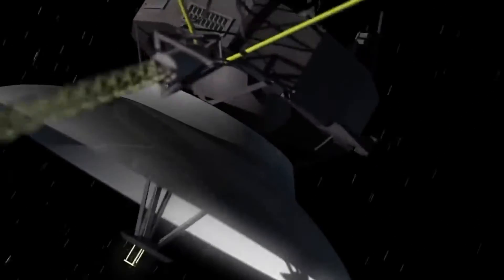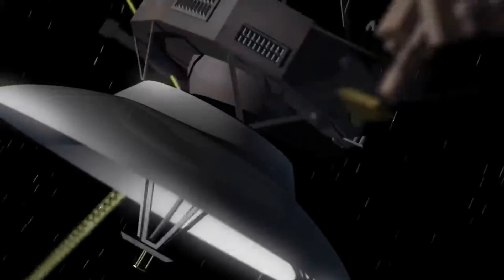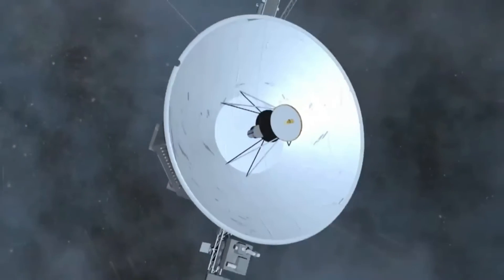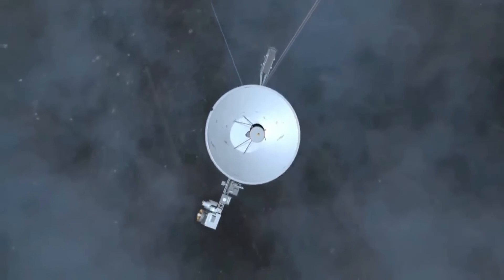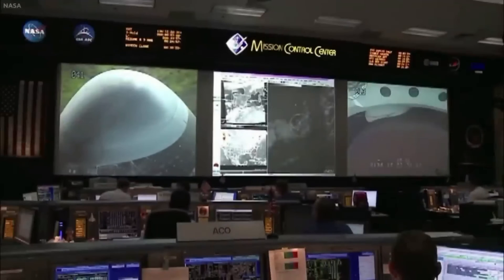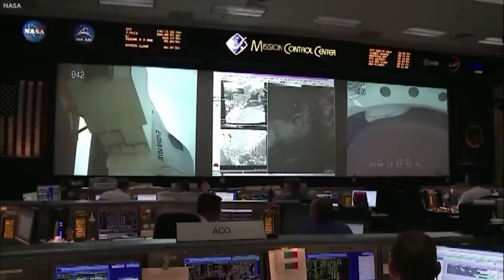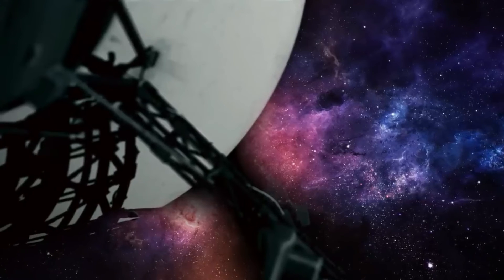The issue was resolved by instructing the AACS to resume sending data through the correct computer. According to the Voyager's project manager Susan Dodd, we'll do a full memory readout of the AACS and look at everything it's been doing. This will help us try to diagnose the problem that caused the telemetry issue in the first place.